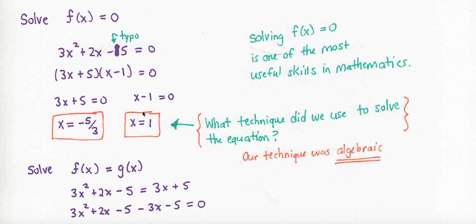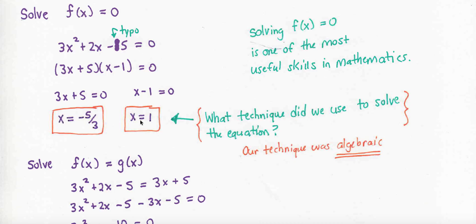Solving each equation gives me the two zeros of the function, negative 5 thirds and 1. What technique did we use? Well, this technique was purely algebraic.